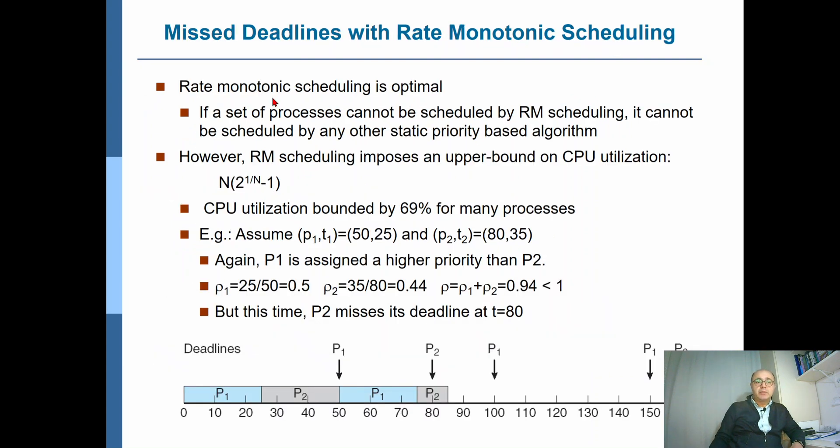Rate monotonic scheduling is optimal. That means if a set of processes are scheduled using rate monotonic scheduling, there is no other static priority based algorithm.